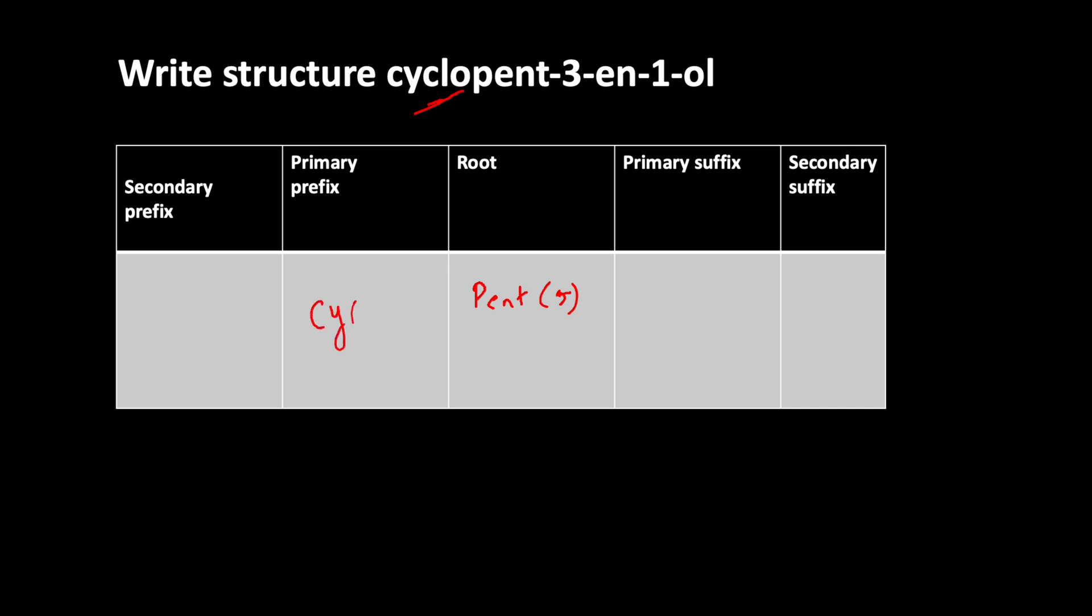The secondary prefix is absent. For the primary suffix, you can see 'en' in the third position. 'En' stands for double bond, so there is a double bond in the third position.